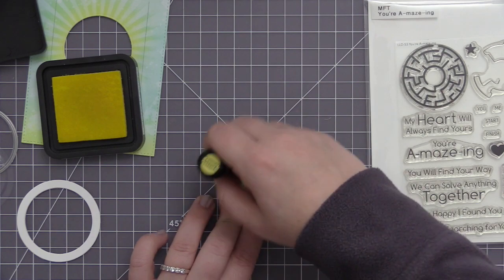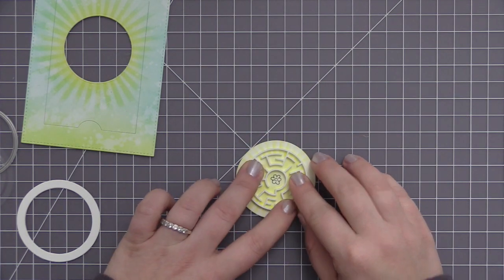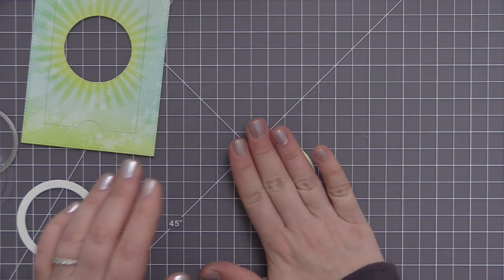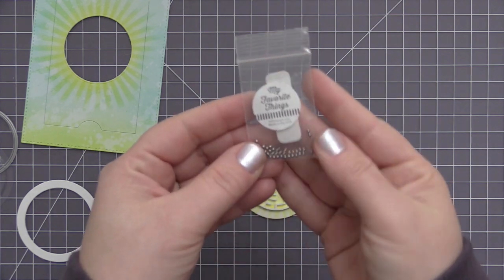I went ahead and figured out where the center is and stamped a flower, and then I've also added the same sun detail that I did to the front of the card so that it would kind of match. When the card is closed you're still going to see all that same sun detail that we did in the front panel.